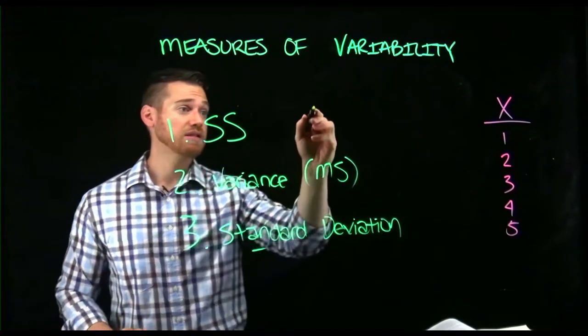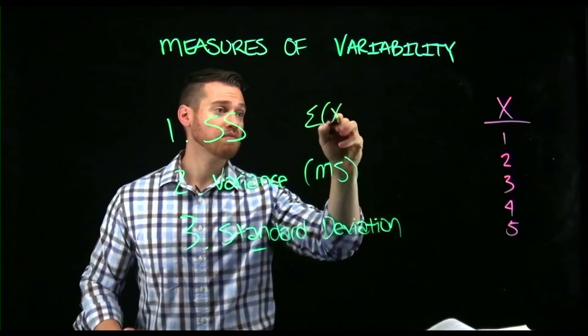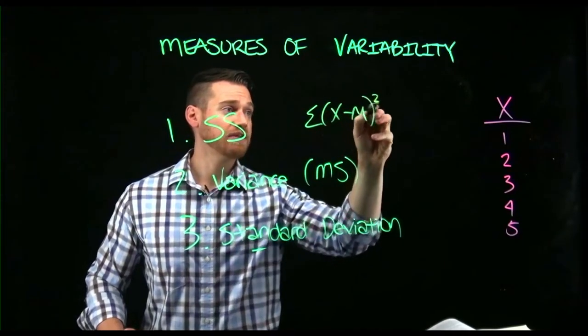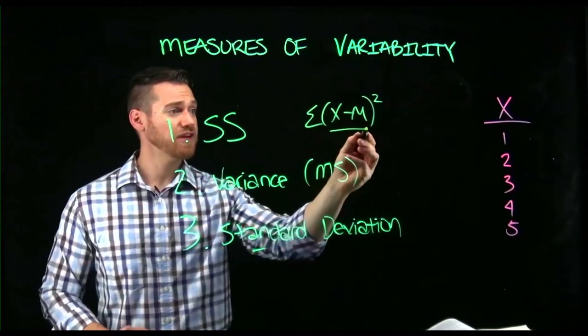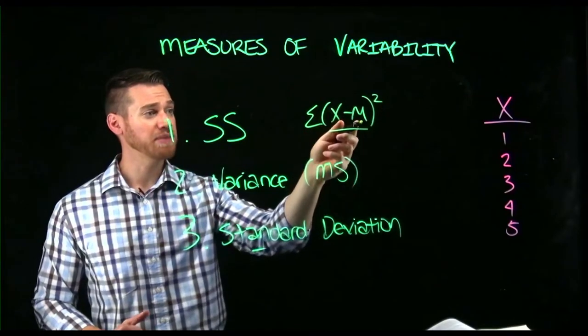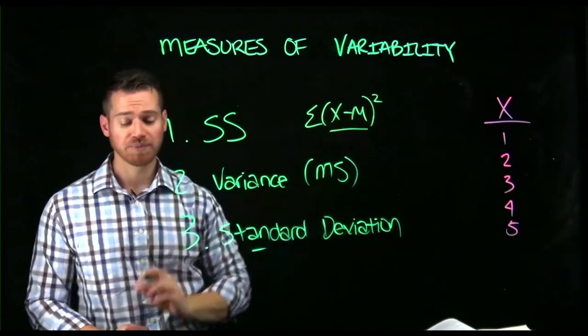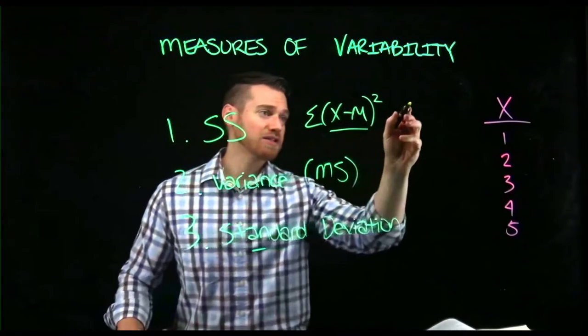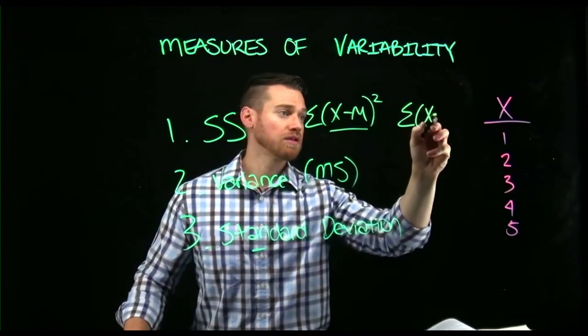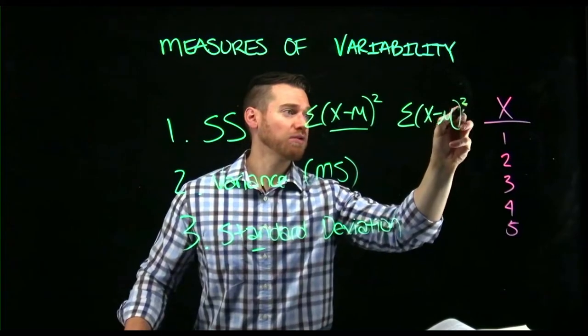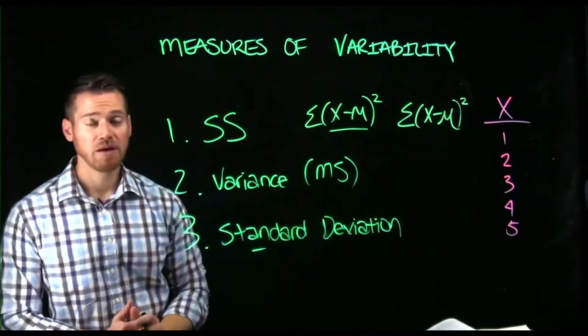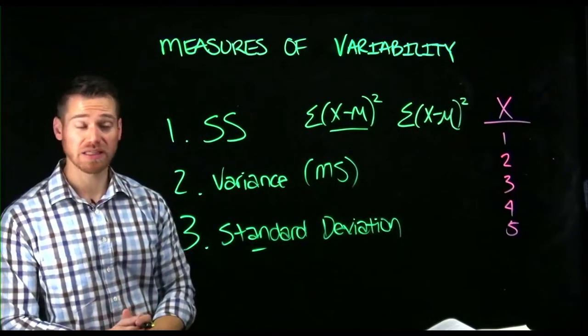The sum of squares is the sum of the squared deviation scores. So this is a deviation score, how a score differs from the mean, and then we're going to square it, hence sum of squares. Now, if we were to write this equation for a population, we would use mu instead of m. But the equation, the math is the same.